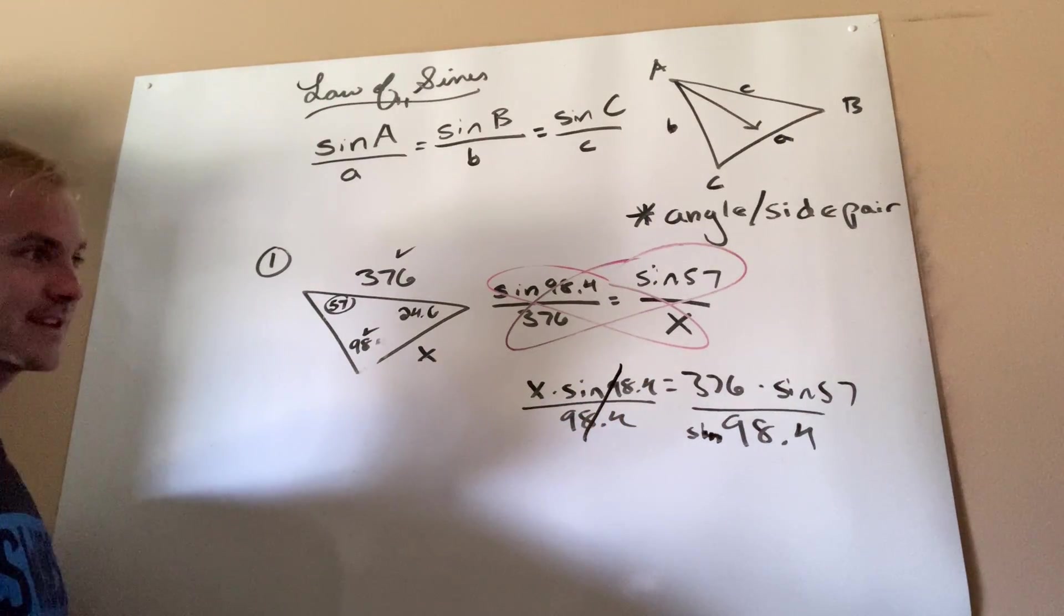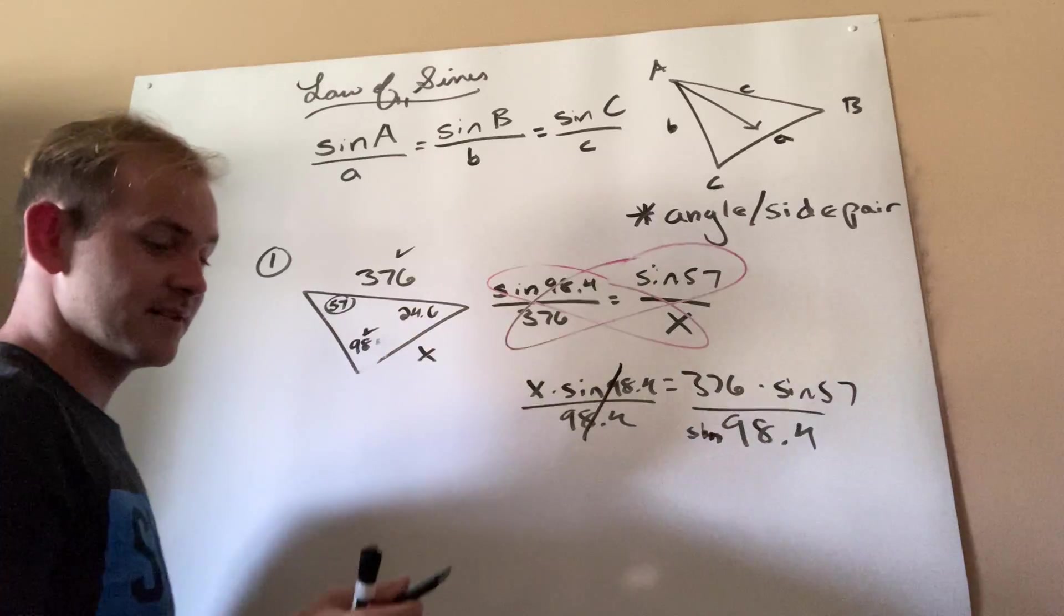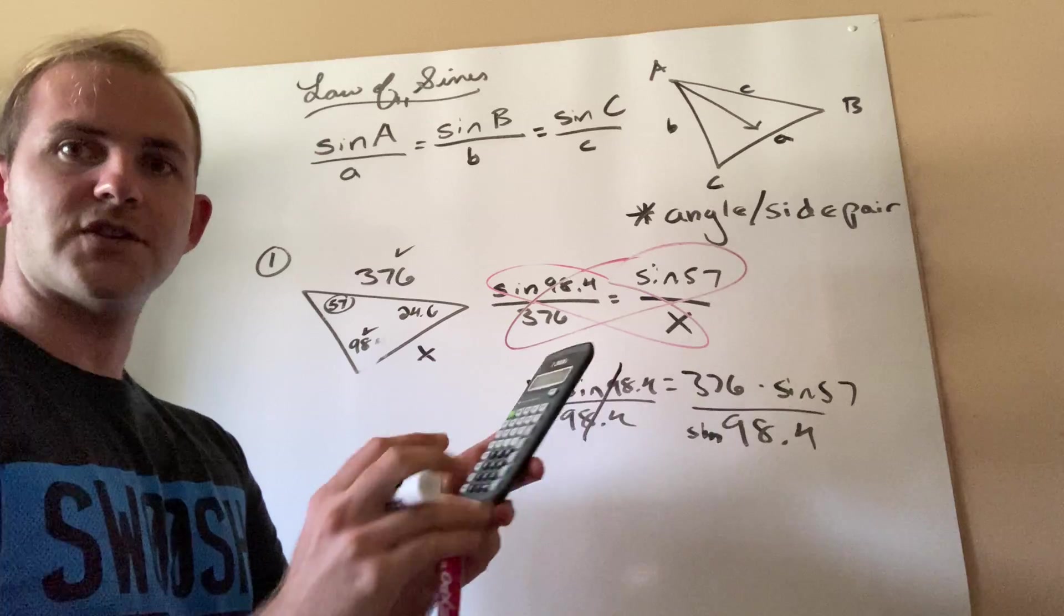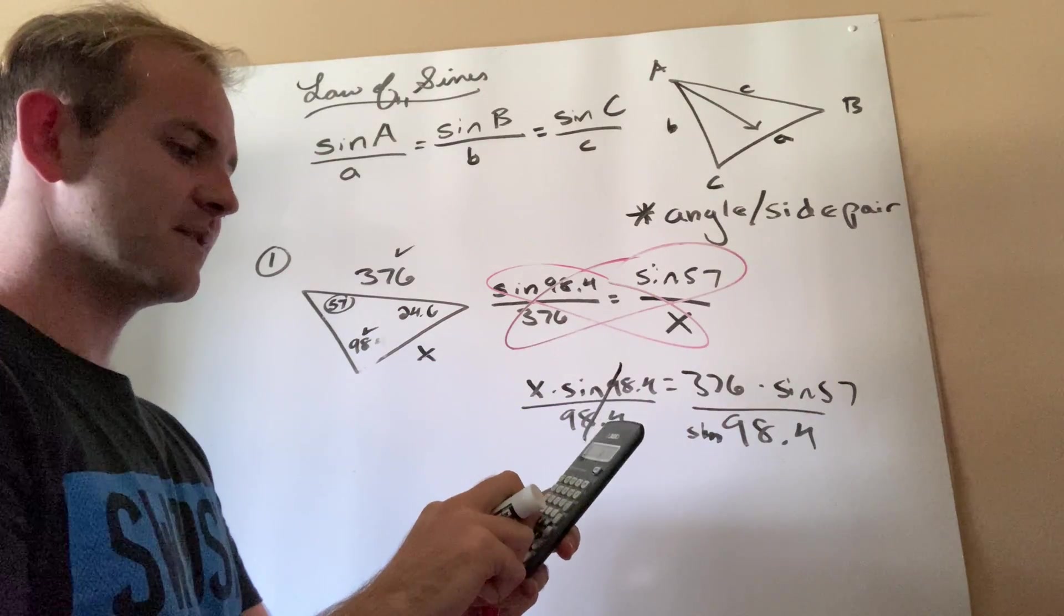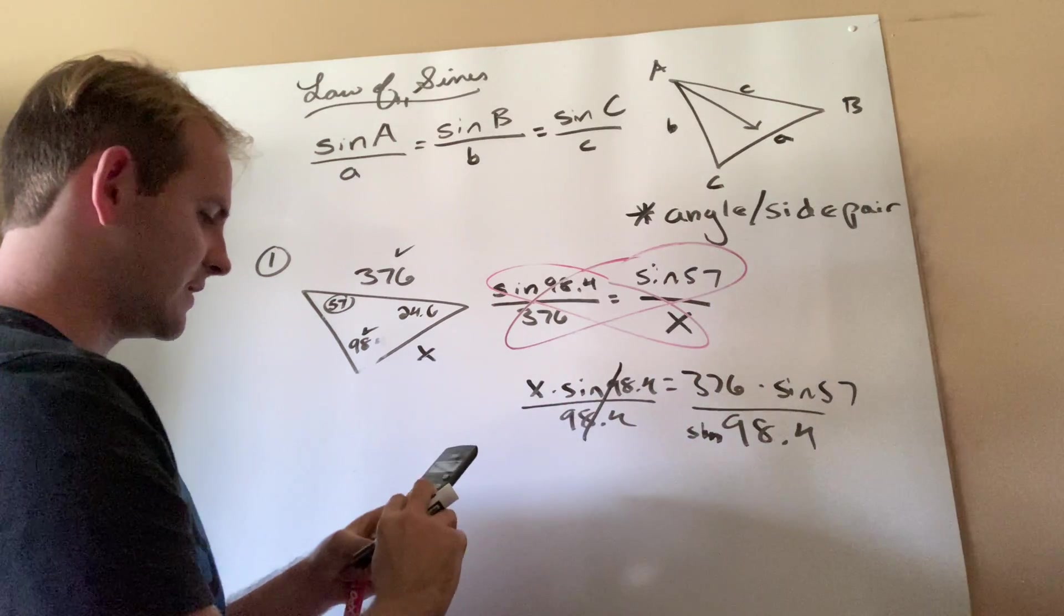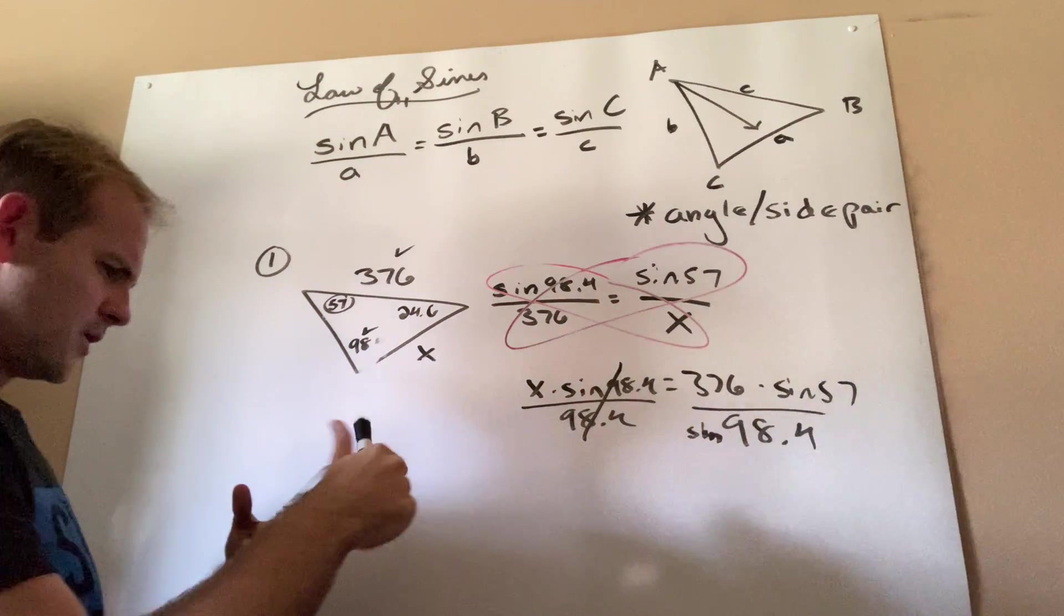So this is honestly, guys, just going to be a lot of decimals. So be prepared. So let's find sine 57 first. So using my calculator, I'm going to type in 57, hit the sine key. I'm going to multiply that by 376.